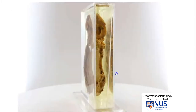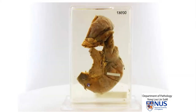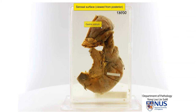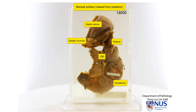Turning this around, we have the serosal surface now — that is the antrum, the pylorus, the duodenum, the pancreas, and we have a little bit of fat here at the greater curve of the stomach. This again is the common bile duct, and this possibly is the pancreatic duct.